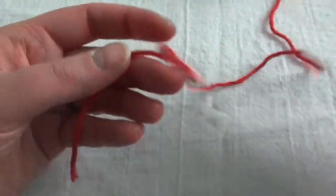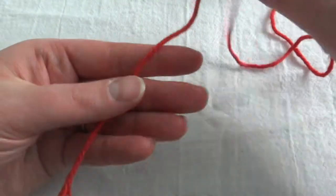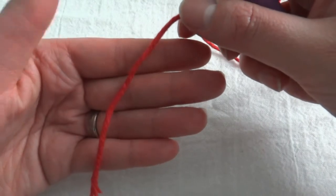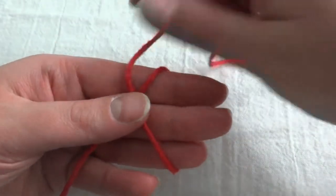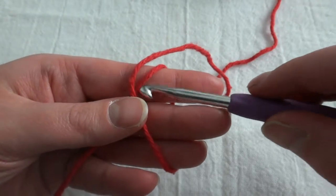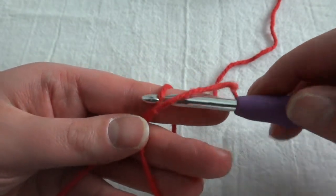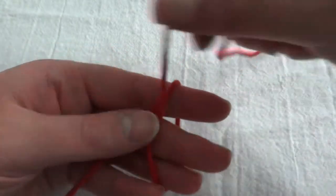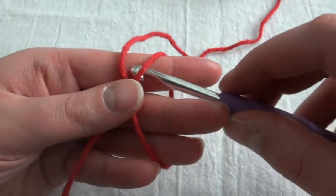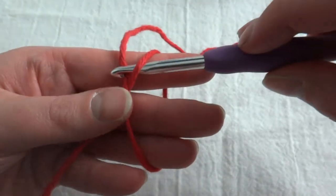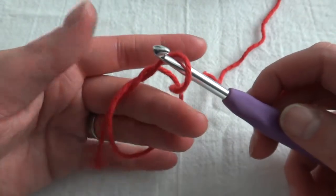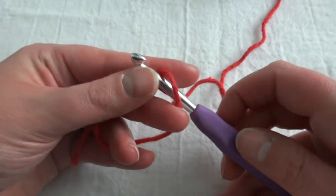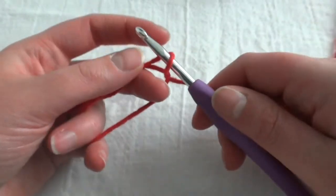So I'll show you that again before we get started with the stitches. So you lay it across your hand, you wrap it around to make the X, you'll put your hook in the lower part and then hook that top strand through and pull it through. So now you have a circle as well as this loop that your hook is on.